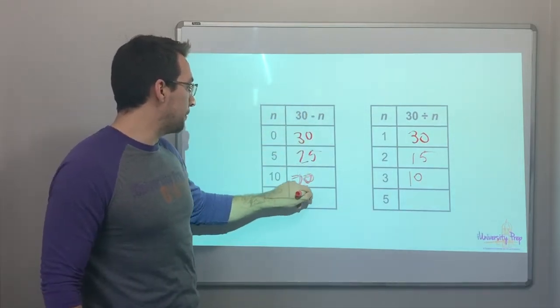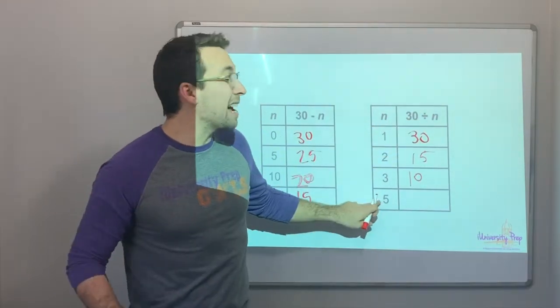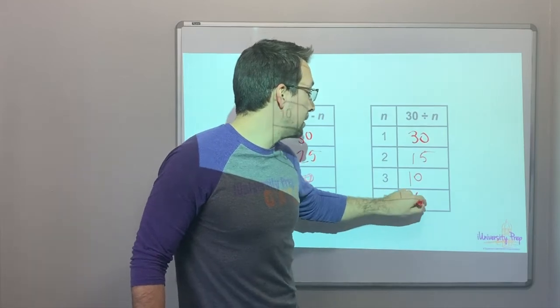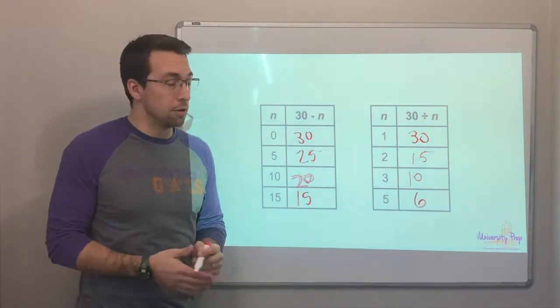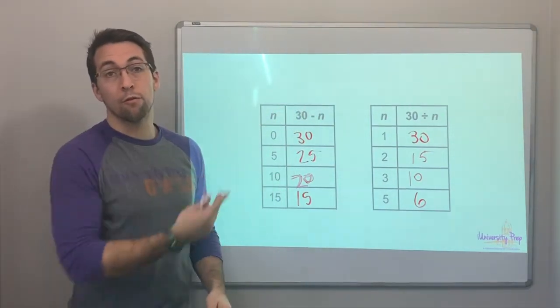And then thirty minus fifteen. Oh, that would be fifteen. And then thirty divided by five. Five times six is thirty. So thirty divided by five would be six. Pretty cool. You just look at the formula and then substitute your value for the variable.